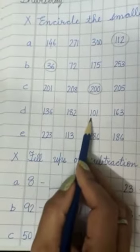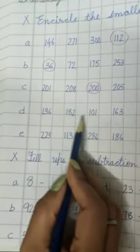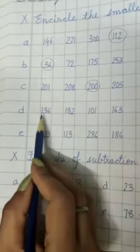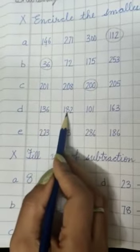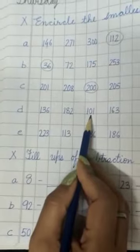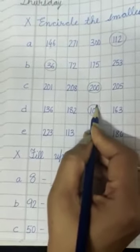136, 182, 101, 163. The first digit in all the numbers is the same. Let's check the second digit: 3, 8, 0, 6. 0 is the smallest. So 101 is the smallest number.